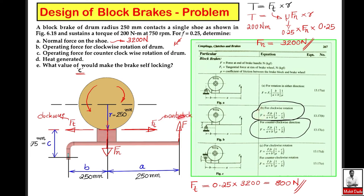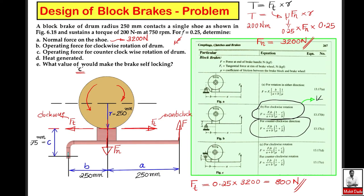In the second part, we evaluate the operating force f applied at the end of the lever, for both clockwise and anti-clockwise rotation. Substituting ft = 800 N, b = 0.25 m, a = 0.25 m, and μ = 0.25 into the clockwise equation gives f = 1480 newton. For the counter-clockwise rotation of the drum, the operating force f = 1720 newton.